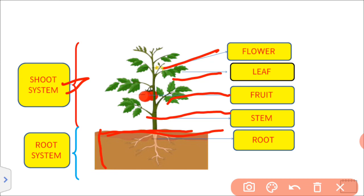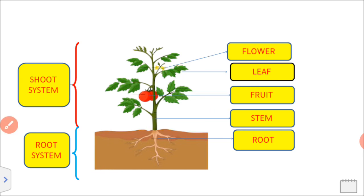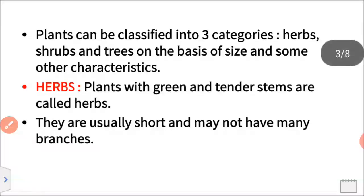The parts of a plant include: flower, leaf, fruit, stem, root, and types of root. We will discuss the details in the next tutorial.